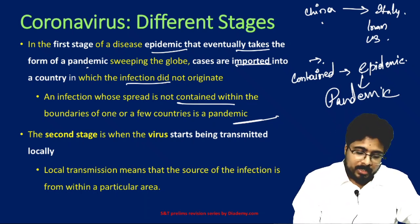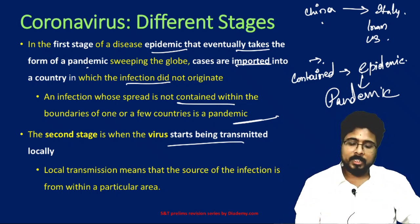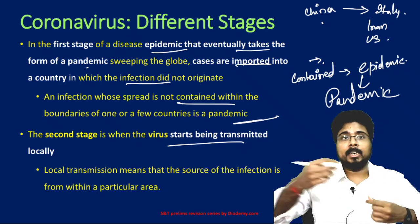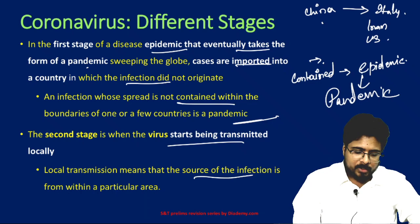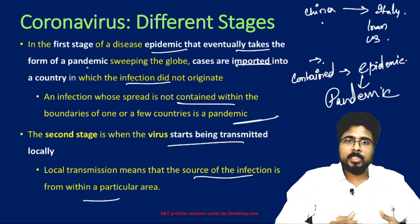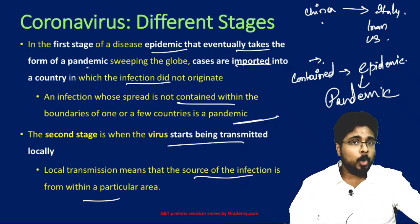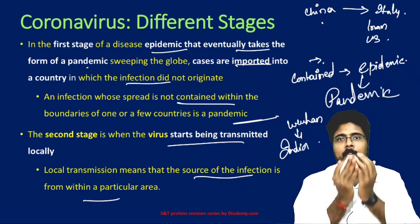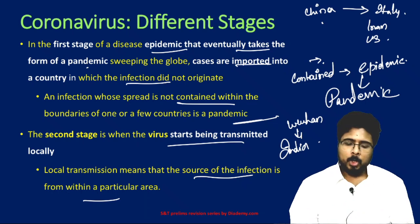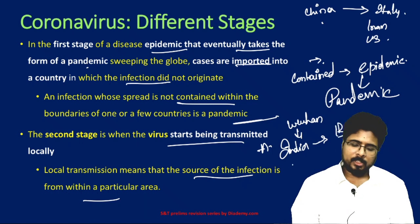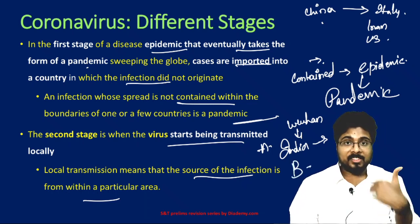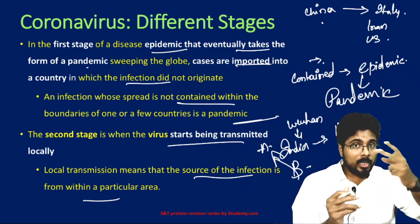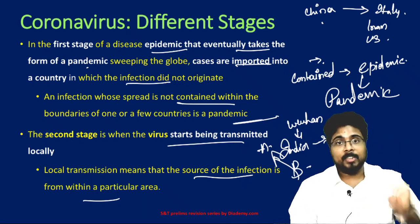The second stage is when the virus starts being transmitted locally. Local transmission means we are able to identify the source of infection within a particular area. For example, a person traveled from Wuhan to India carrying the virus, and from that person (A) it spread locally to another person (B). We have established the contact — we know B got the virus from A. That ability to identify the source is the defining feature of stage two.